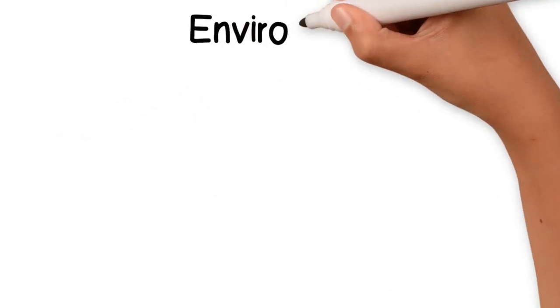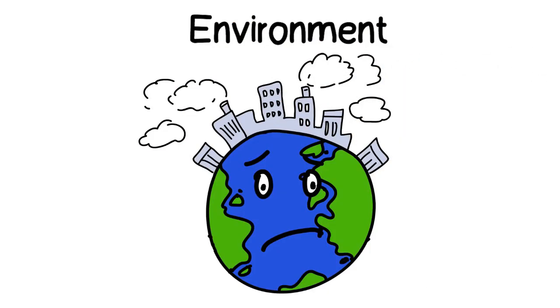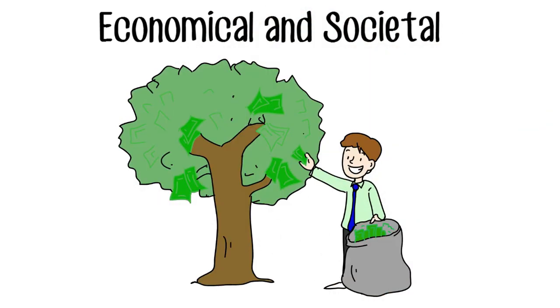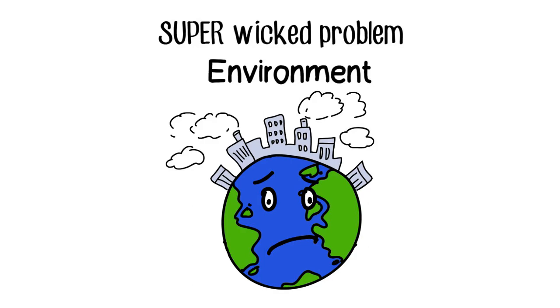However, some wicked problems are more wicked than others. Especially some environmental problems, such as climate change, are very challenging to solve, as it is tied to environmental, economic, and societal issues. For this reason, climate change is sometimes called a super-wicked problem.